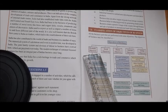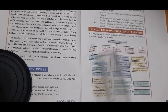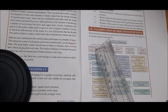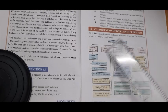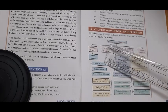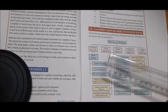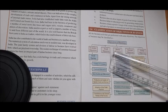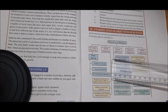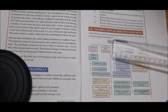The first part is economic objectives. Under economic objectives, we see profit earning, creation of customers, continuous innovation, and best possible use of resources. These are the four objectives which come under economic objectives.